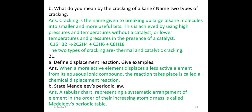What do you mean by cracking of alkanes? Name two types of cracking. Cracking is the name given to the breaking of large alkane molecules into smaller and more useful bits. It is achieved by using high pressure and temperature without a catalyst, or low temperature and pressure in the presence of a catalyst. For example, C15H32 is converted to two molecules of C2H4 plus C3H6 plus C8H18. The two types of cracking are thermal cracking and catalytic cracking.